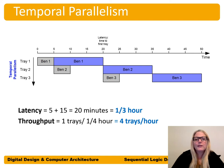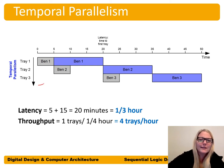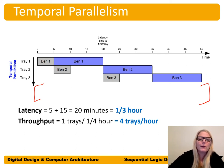What if both Ben and Alyssa use spatial and temporal parallelism together? Ben and Alyssa are both doing temporal parallelism. Now instead of one tray every quarter of an hour, with both spatial and temporal parallelism we get two trays every quarter of an hour, which equals eight trays per hour.